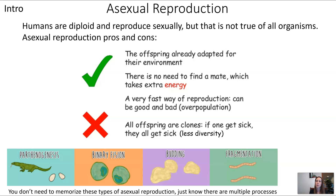This is one of the major advantages of sexual reproduction, but it comes with the flip side — it takes extra energy and it's complicated. Below is a little diagram of several forms of asexual reproduction. You don't need to memorize these different types, just be aware that there are different methods of asexual reproduction.